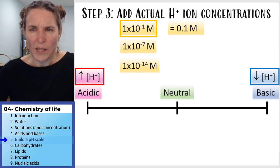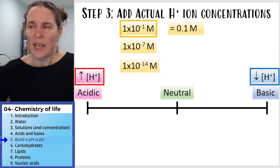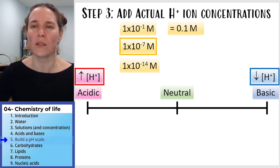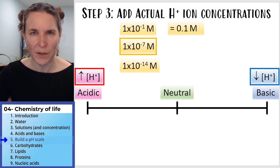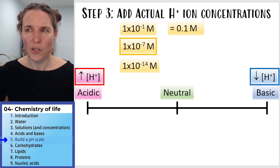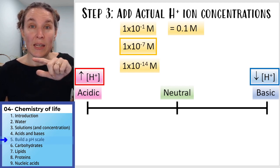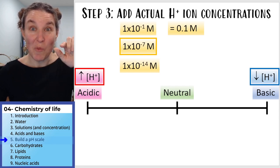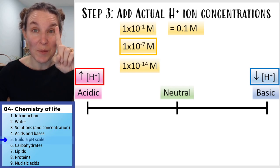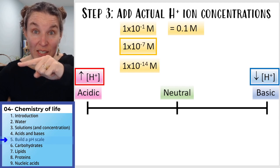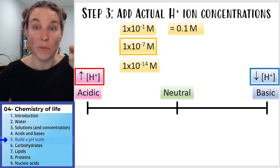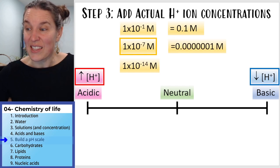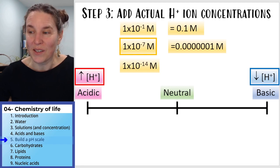The first one is a 0.1 molar solution. The second — 10 to the negative seven — if we move the decimal point from the one back seven places, you end up with one ten-millionth of a mole. That's a smaller number.